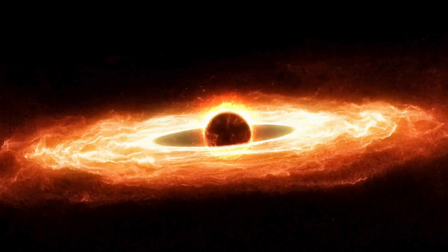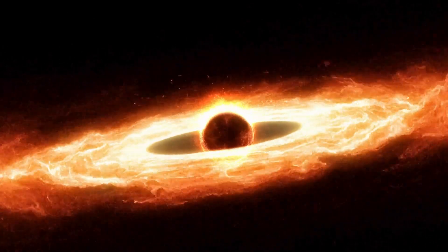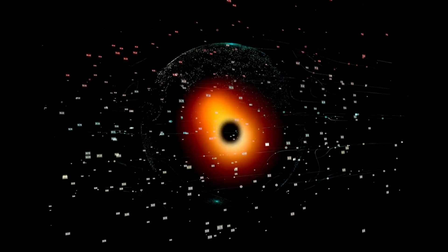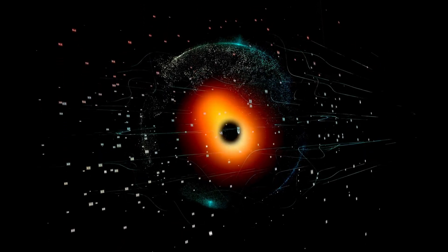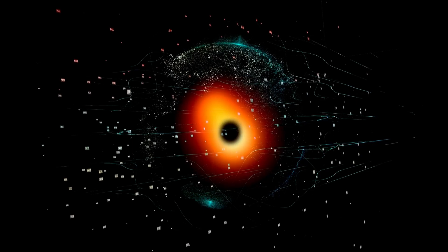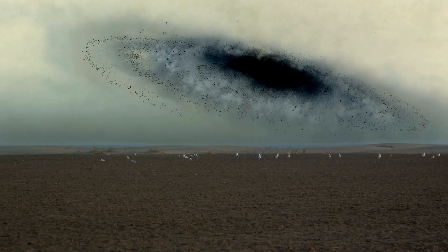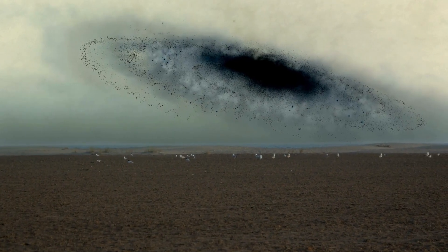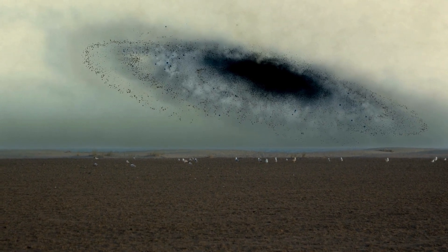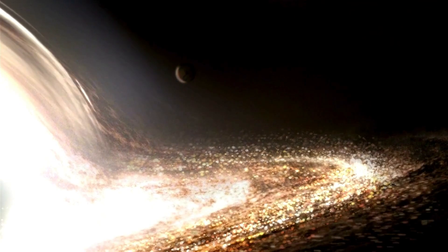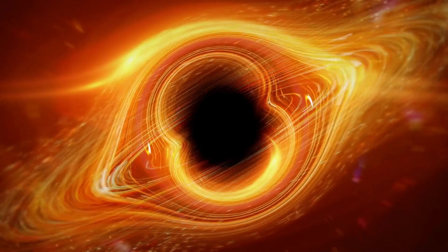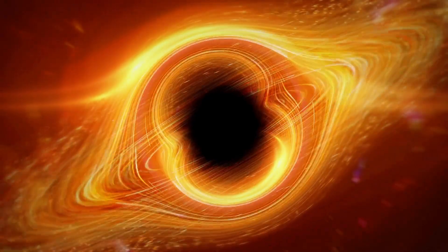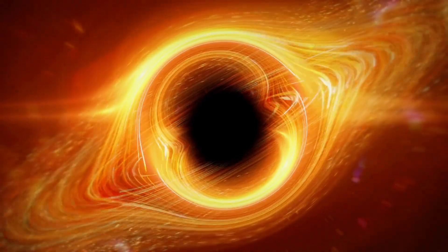This cataclysmic process, known as spaghettification, represents the ultimate manifestation of a black hole's gravitational dominance. As an object approaches the event horizon, the gravitational gradient across its length becomes so extreme that it is stretched and distorted into a filamentary structure resembling strands of spaghetti. The forces exerted by the black hole overwhelm the internal bonds holding the object together, resulting in its disintegration into a stream of matter destined to merge with the singularity.